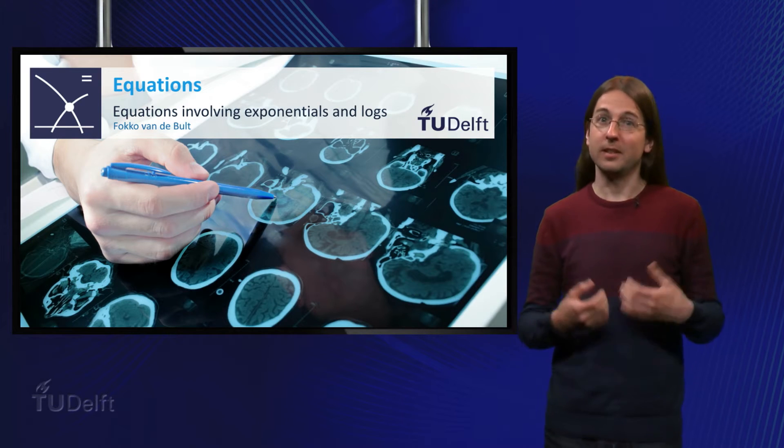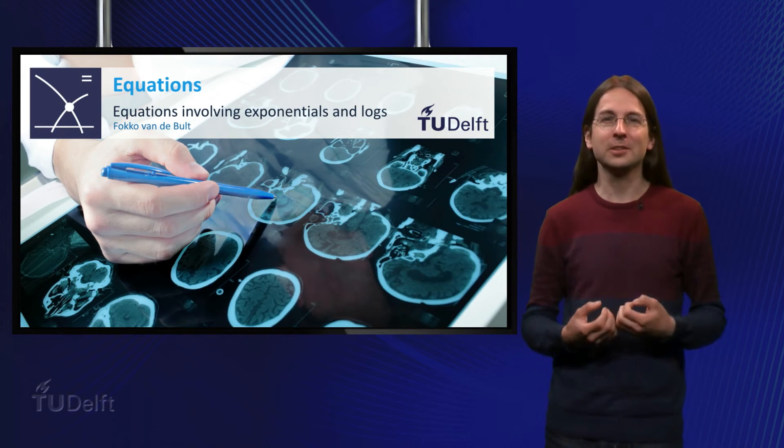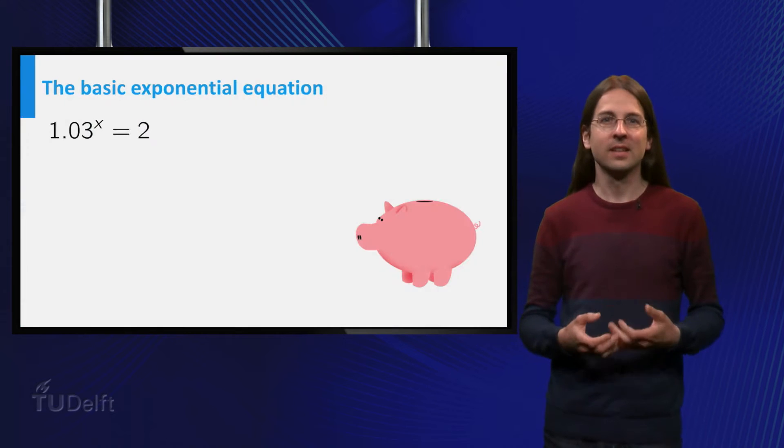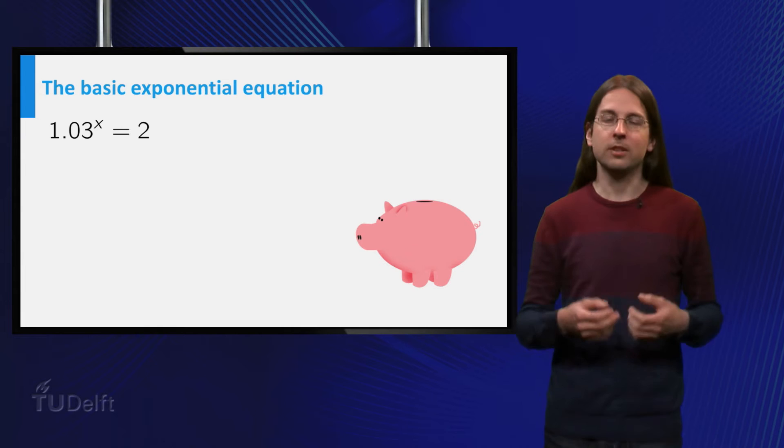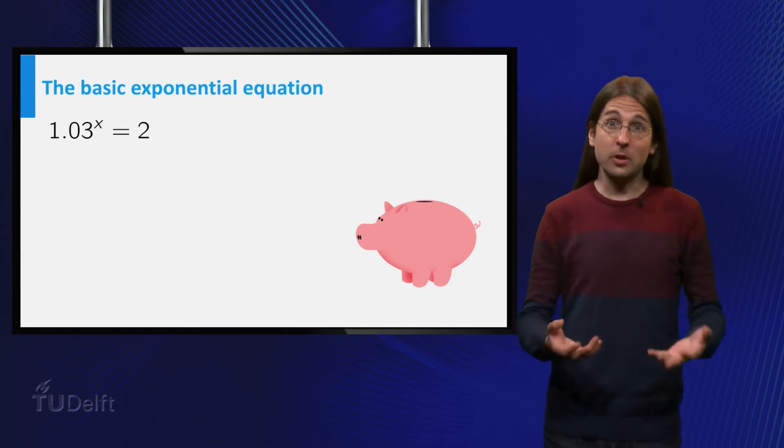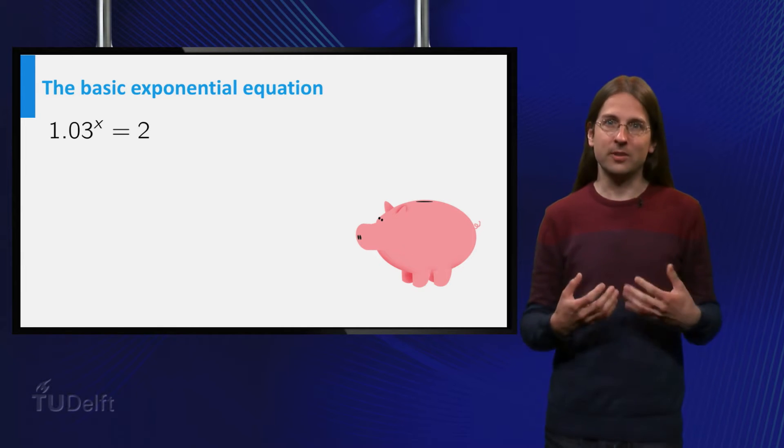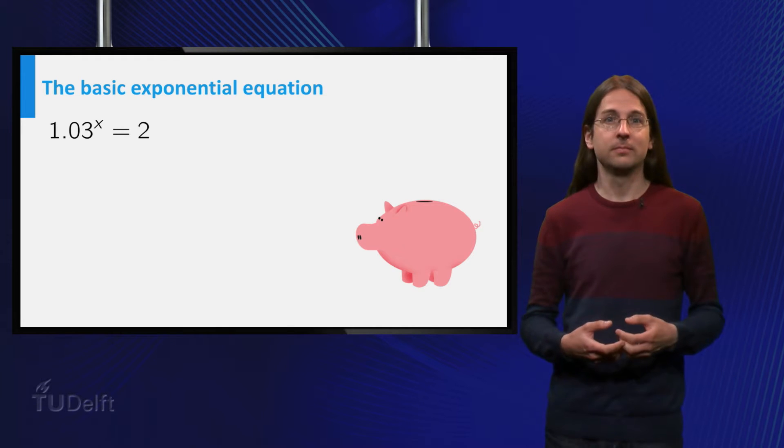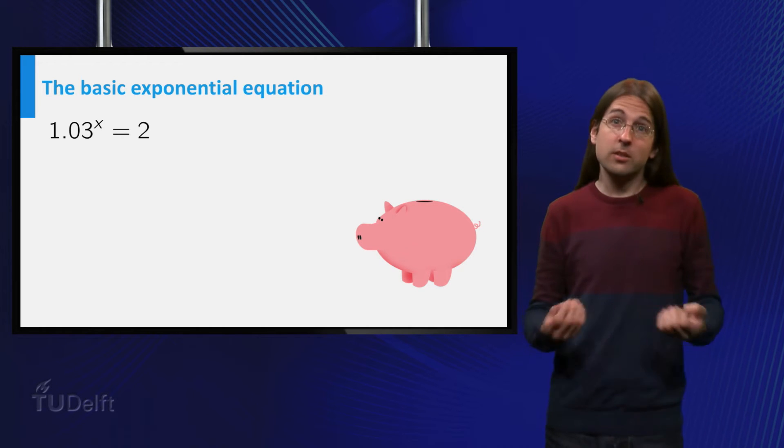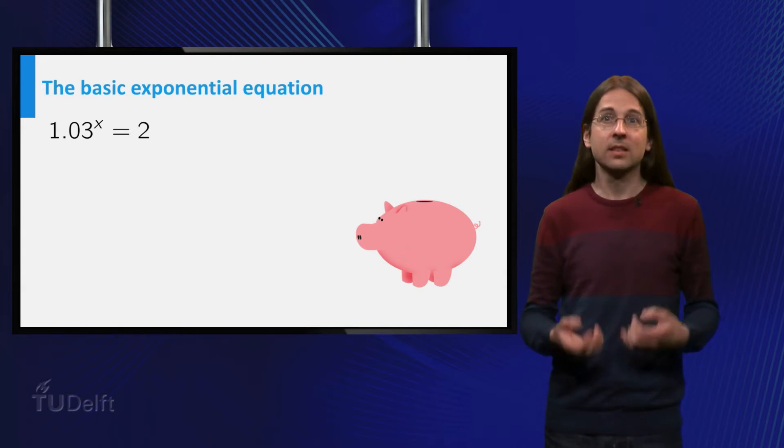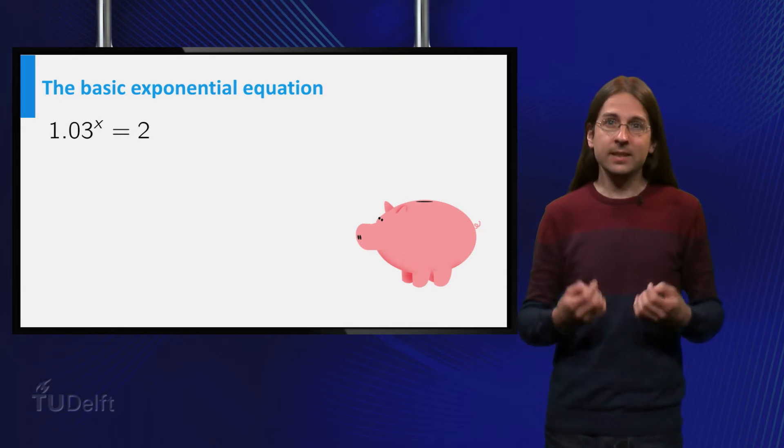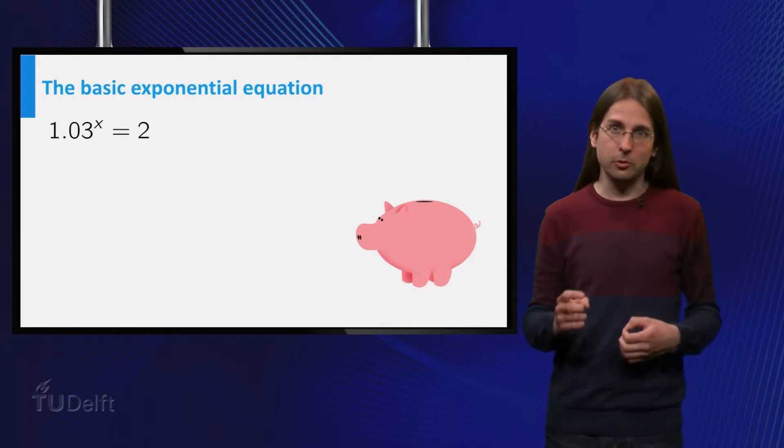In this video we consider equations involving exponential functions and logarithms. Consider the situation from the introductory video on exponential functions. Suppose you have a bank account and you obtain 3% interest per year. How long will it take before you double your savings? This situation is equivalent to the equation 1.03^x = 2, where x is the time in years after your first deposit.